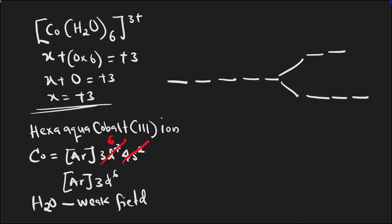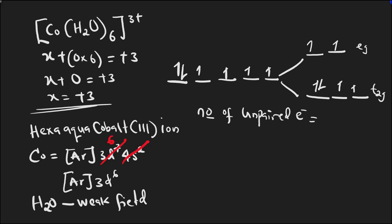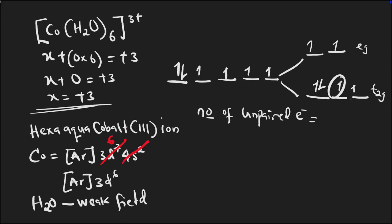Using octahedral splitting with t₂g and eᵍ levels, since water is a weak field ligand, we enter the six electrons singly before pairing. Filling them: one, two, three, four, five, six. Counting the unpaired electrons: one, two, three, four — there are four unpaired electrons.